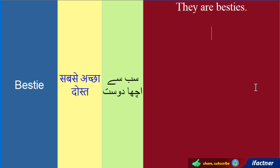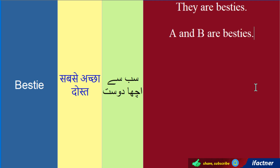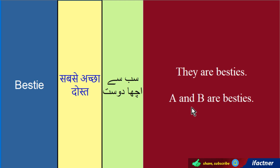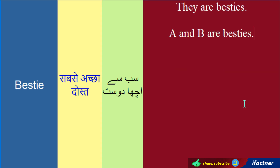Let's suppose A and B are besties. Naam hain A and B. Toh humne kaha ke A and B jo hain, woh best friends hain, besties hain, sab se achhe dost hain. A and B are besties. Isi tarah mein aap se pooch sakta hoon ke...